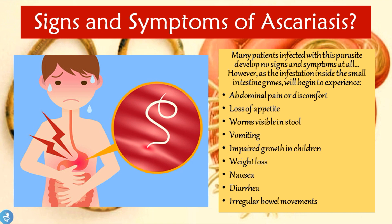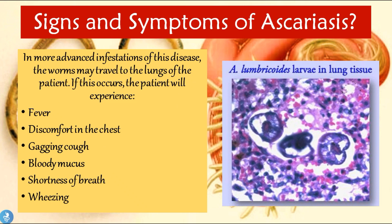Many patients infected with this parasite develop no signs or symptoms at all. However, as the infestation grows, the patient may experience abdominal pain or discomfort, loss of appetite, worms visible in the stool, vomiting, impaired growth in children, weight loss, nausea, diarrhea, and irregular bowel movements. In more advanced infestations, the worms may travel to the lungs, causing fever, chest discomfort, a gagging cough, bloody mucus, shortness of breath, and wheezing.